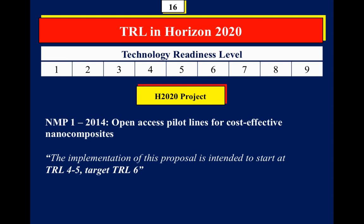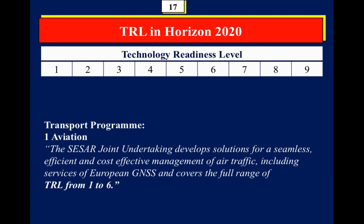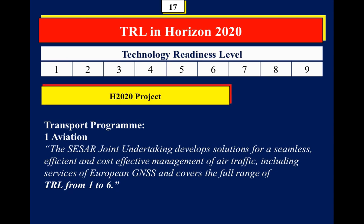Looking at another program — aviation under the transport programme — the Clean Sky joint undertaking focuses on TRL one to six, covering basic concepts right through to demonstration and prototyping. TRL is mainly mentioned in Pillar Two, which is industry leadership. In Pillar Three, societal challenges, TRL is not mentioned as often, but you still need to use the same concepts when explaining at what level your project is focusing.